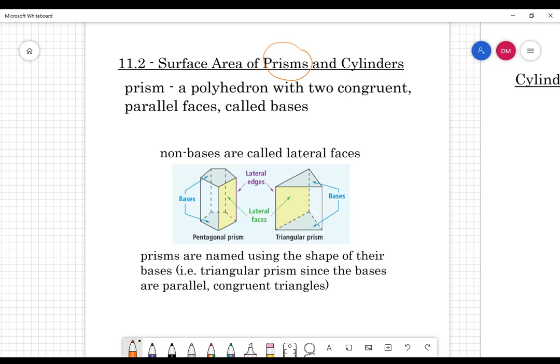A polyhedron - polygon would be the word for our two-dimensional figure. So polyhedron, that ending of the word means that it's a three-dimensional figure, not two-dimensional.